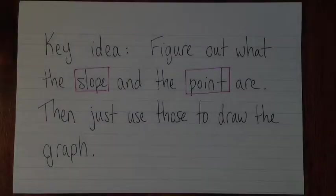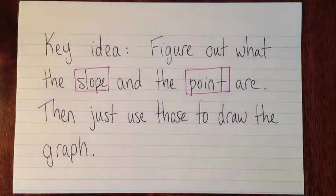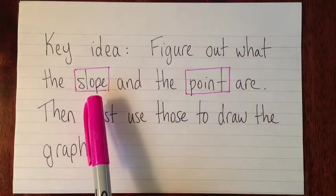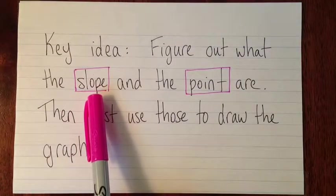Hi. In this video, we're going to look at how to graph a line if you have the equation in slope point form. So the key idea here is that when we look at the equation, we're going to try to figure out what the slope of the line is, just from where that number is in the equation.